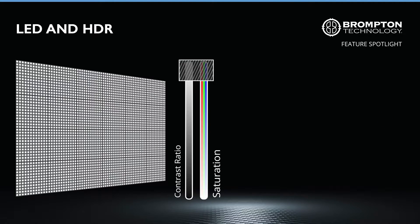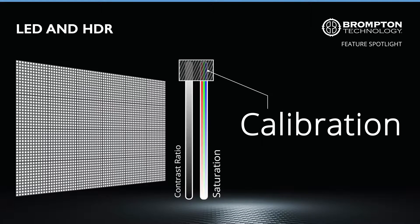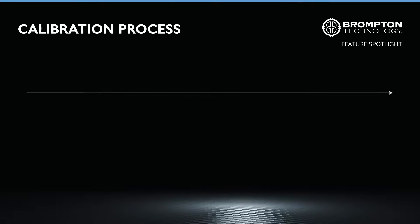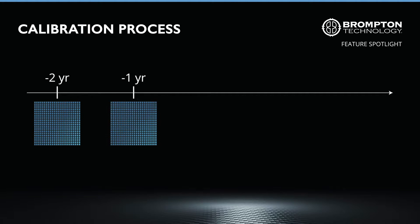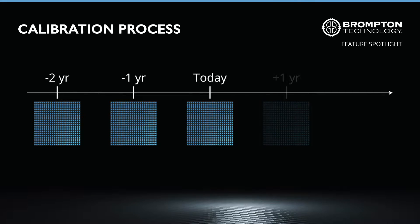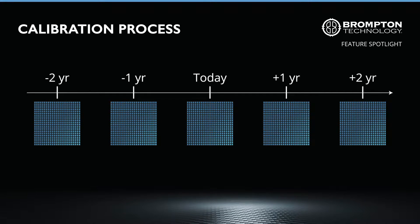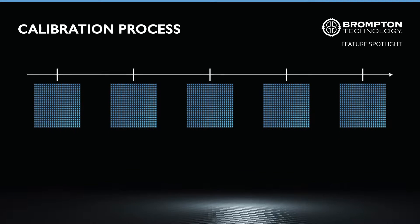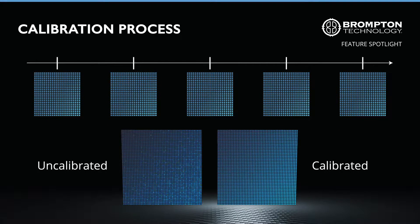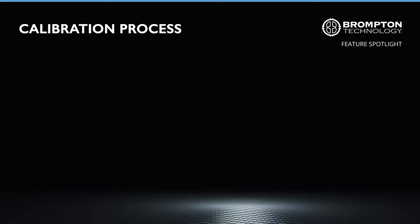However, they are held back by one major factor – calibration. Calibration ensures that LEDs produced yesterday will achieve the same uniform output as the ones produced tomorrow. Without calibration, images on LED screens would look noisy and speckled, which is why calibration has been a standard practice within the industry. However, it comes at a cost.